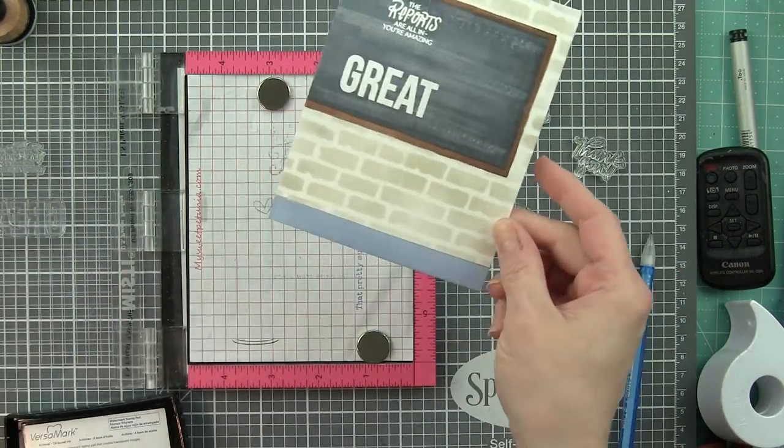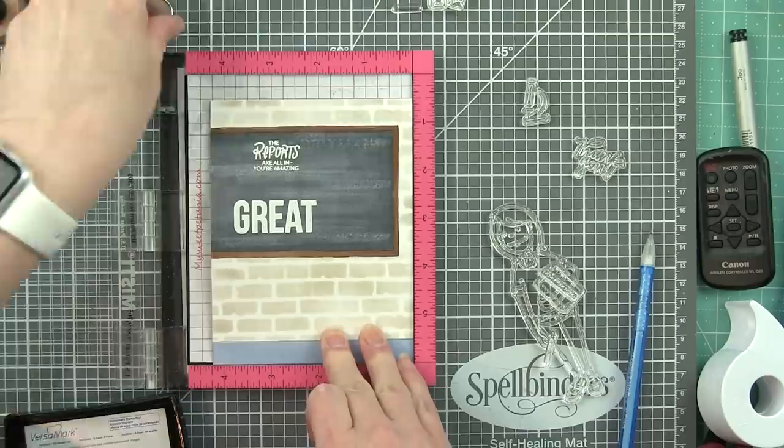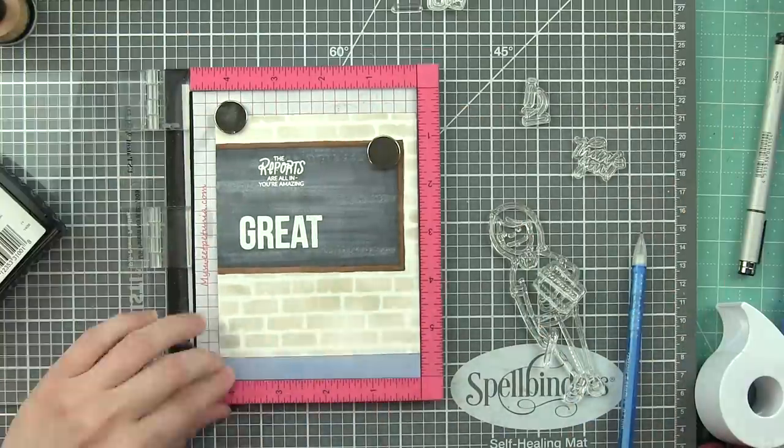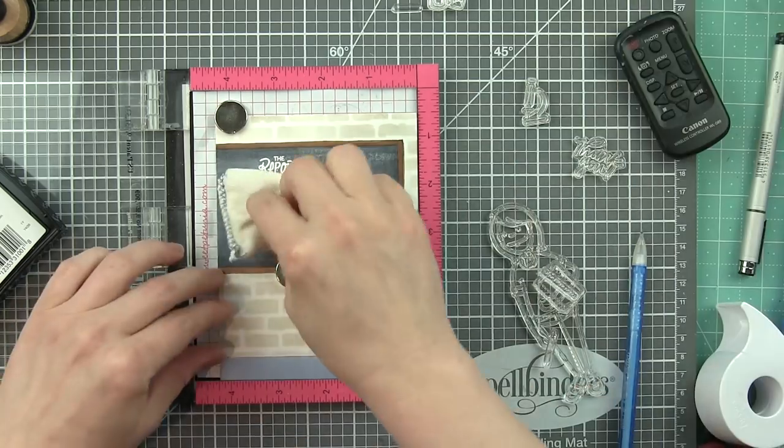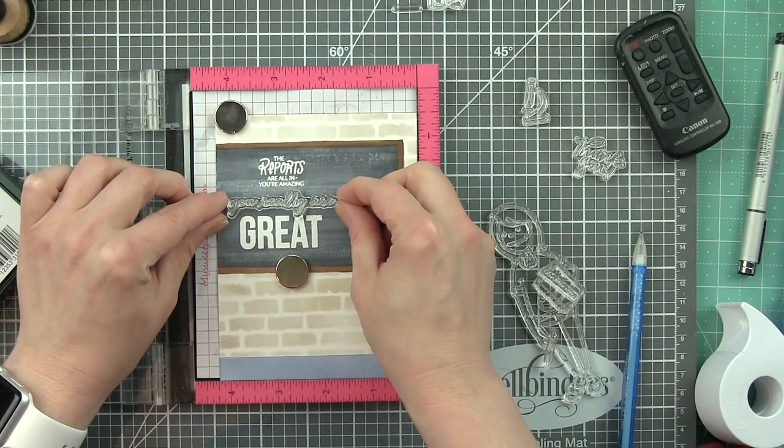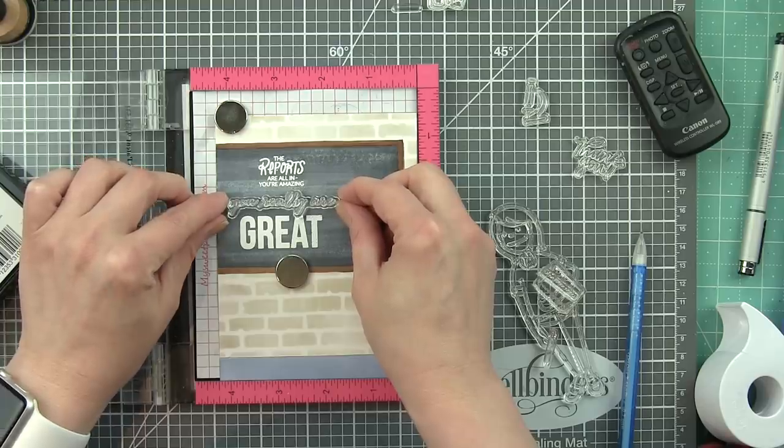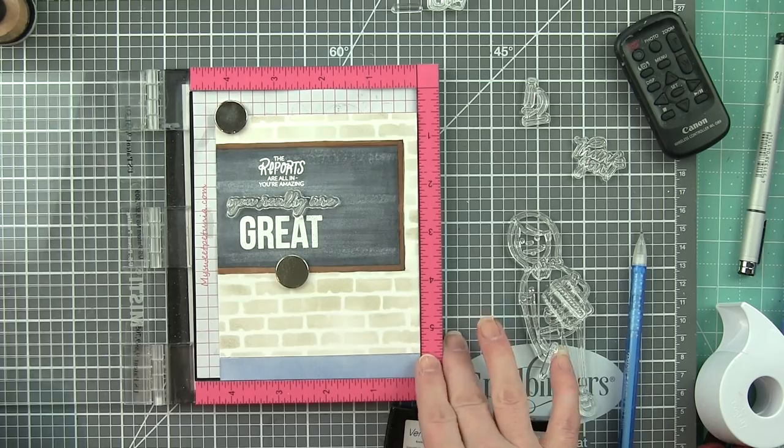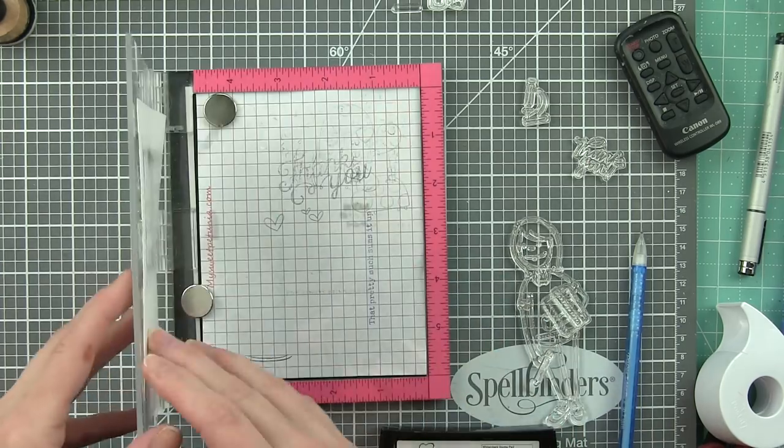I'm going to hit the back of my paper, the front of my paper, go ahead and pop this back in my mini Misti, clean off these other stamps, put those away, grab my 'You Really Are' greeting, and we'll stamp that right above here just like we did with the other two. And you can totally see that chalkboard coming to life.